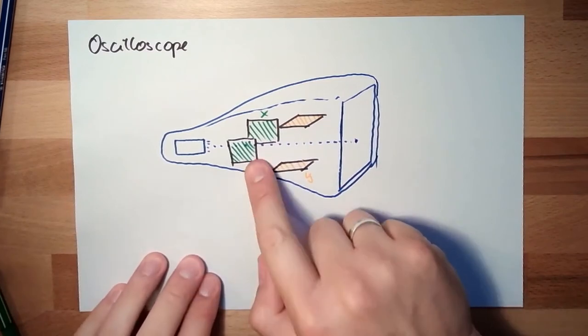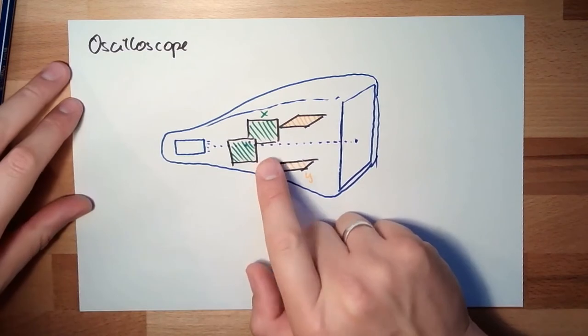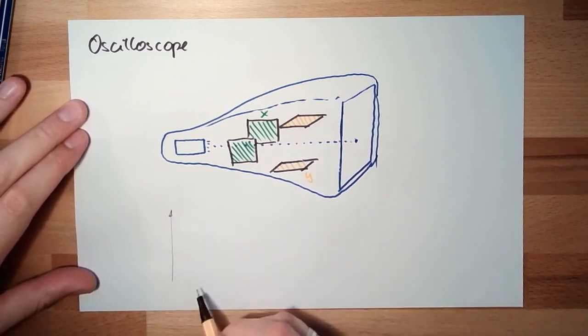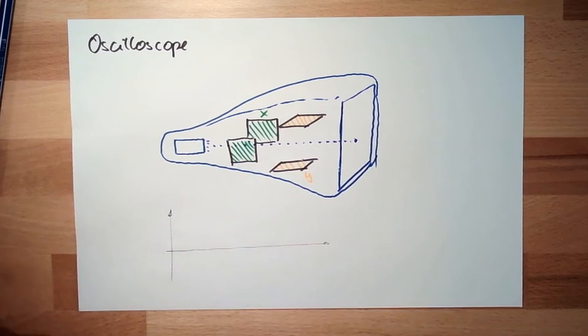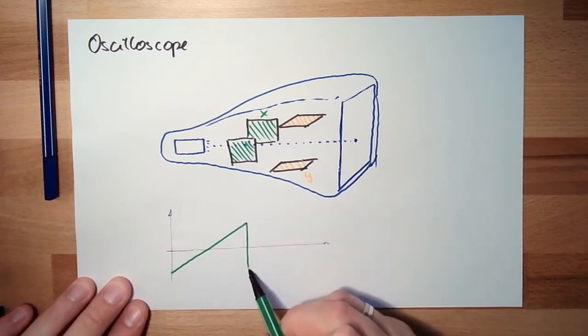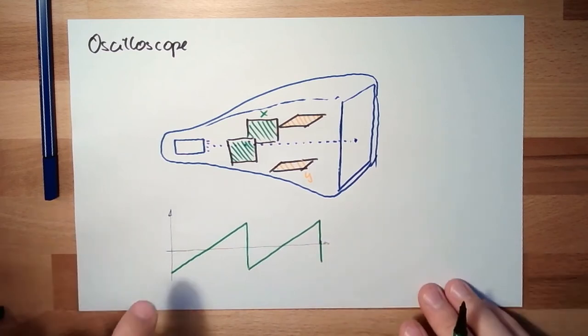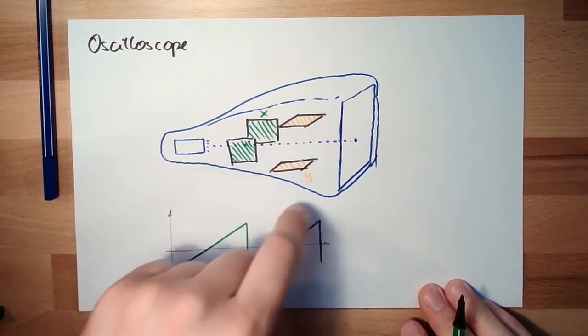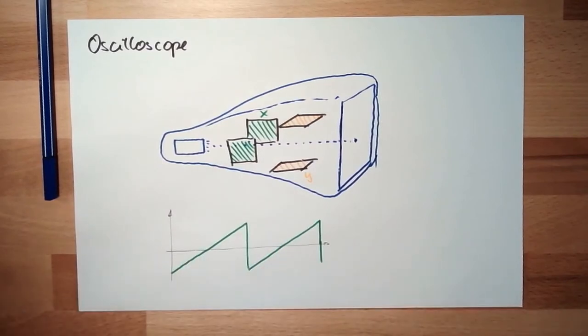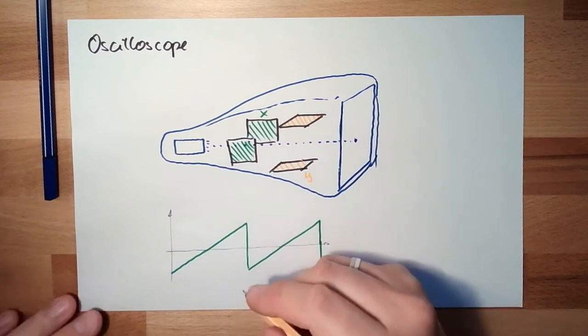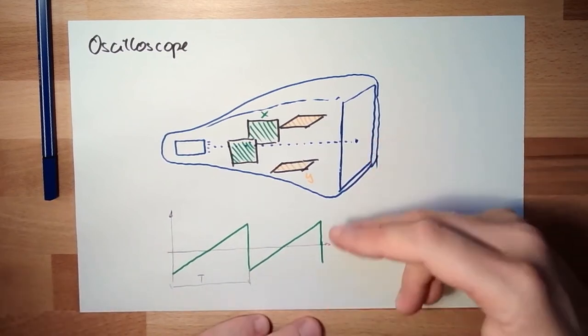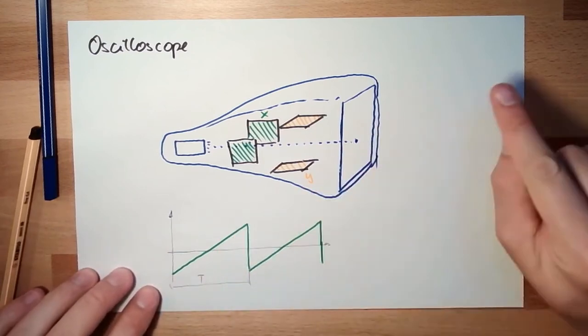And if I am now switching on the x-plate, a voltage which looks like this, the x-voltage start negative, goes positive, and jump then to the negative again. This would cause here to start the point at the left side, wander to the right side, and then jump back to the left side. This here is the period time T, which is adjusted. If I make it faster, the point will run faster.